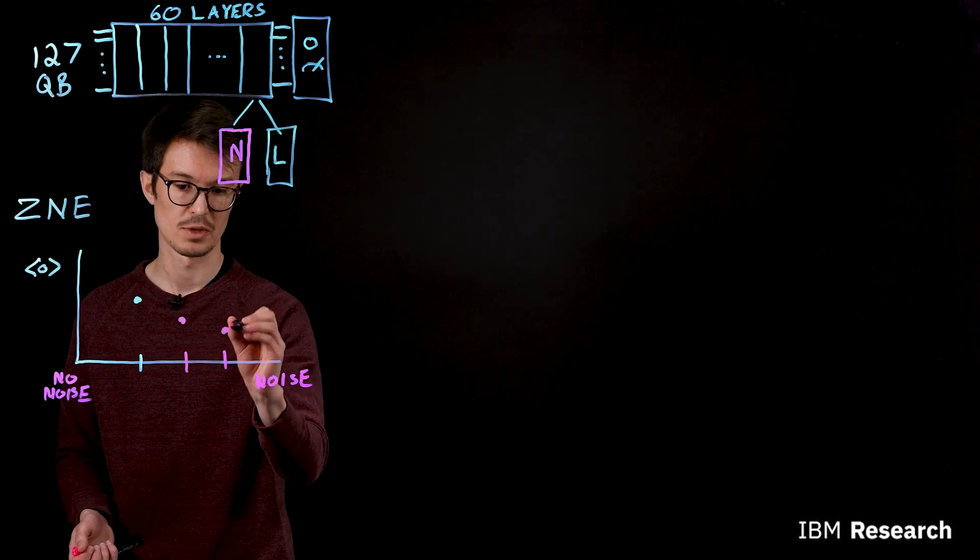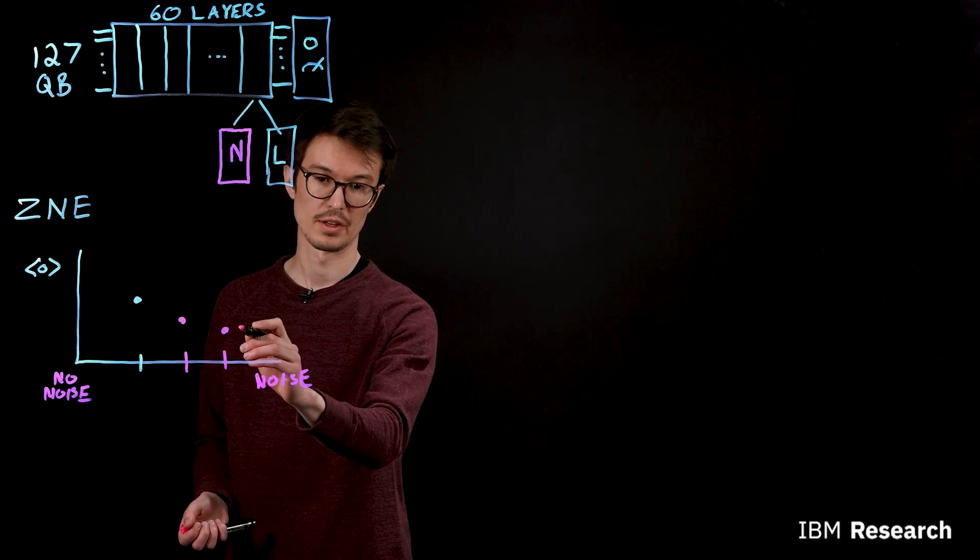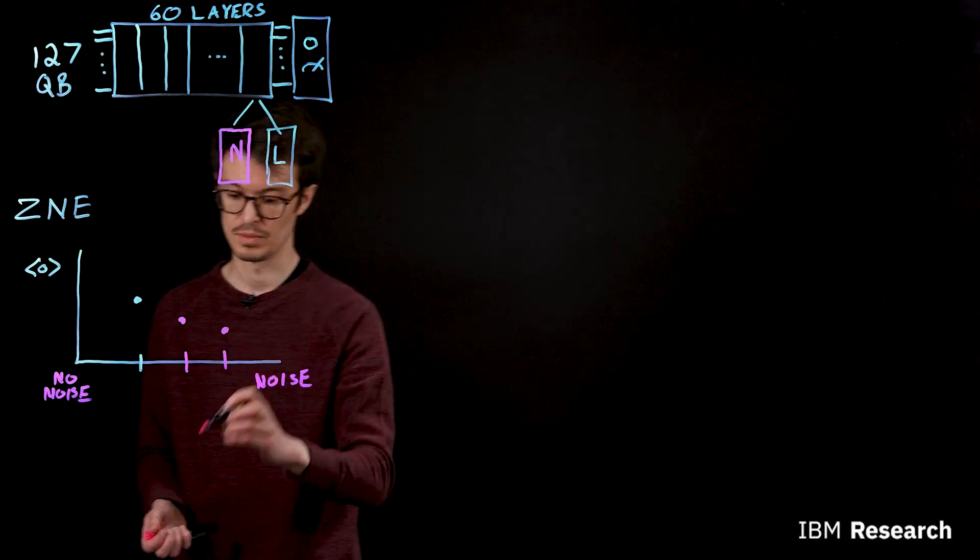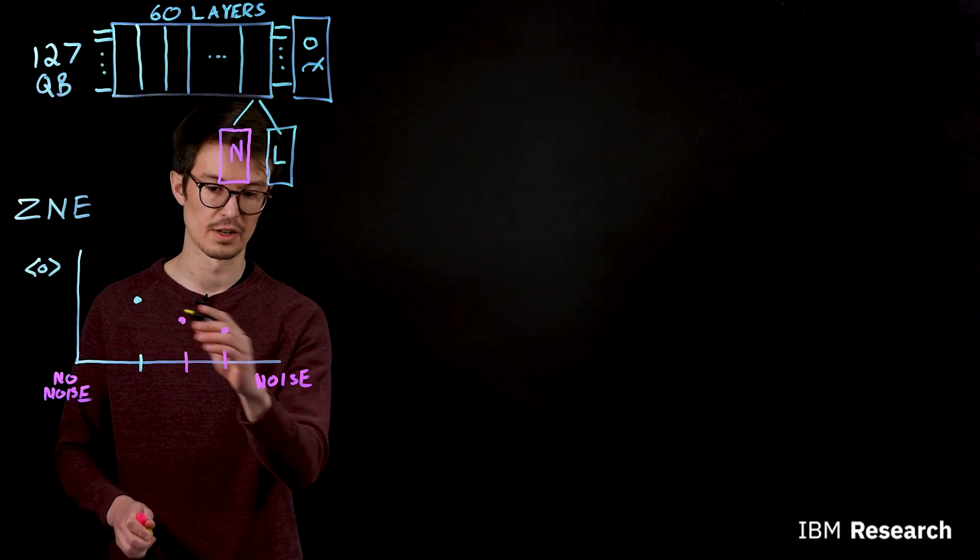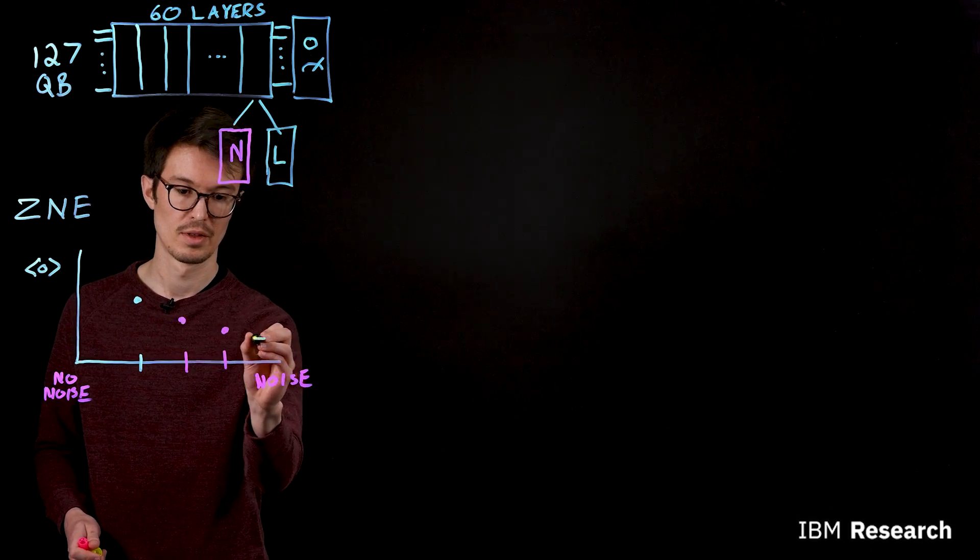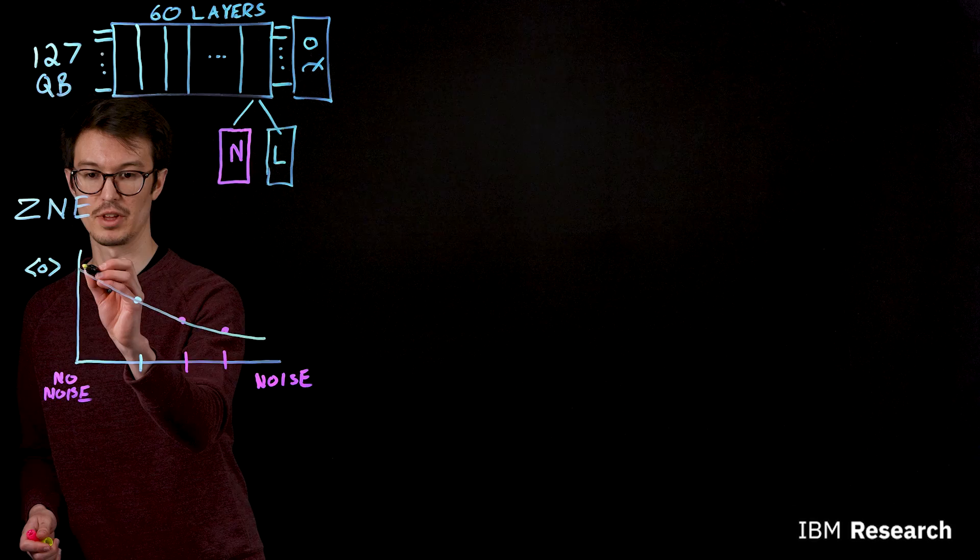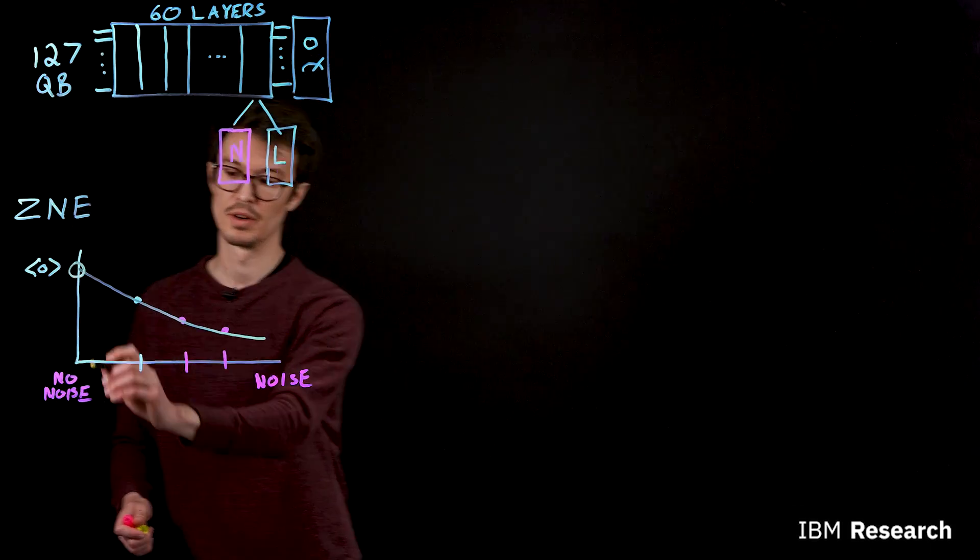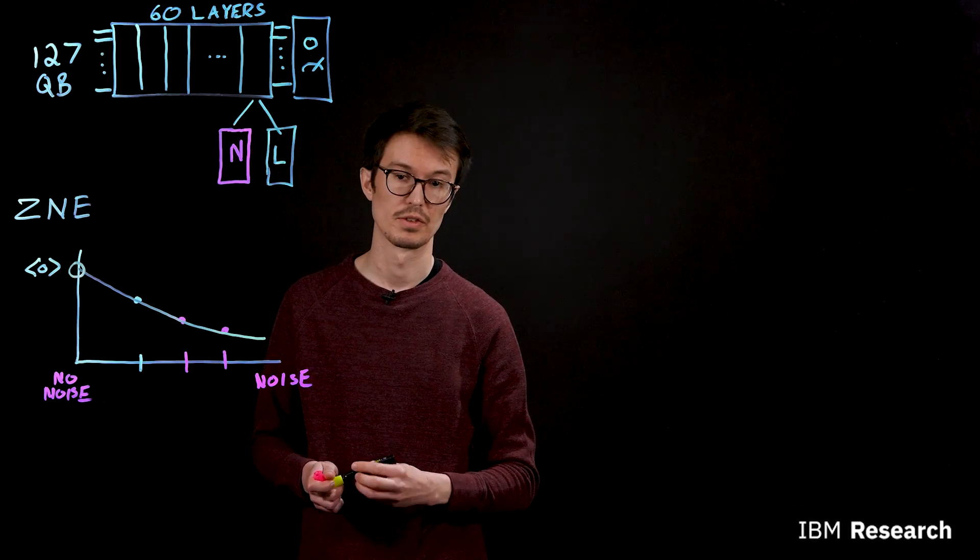So by repeating the experiment in the condition where we've increased the noise, we can then get additional results, which we can use to extrapolate back and estimate the true value in the case of no noise on the hardware.